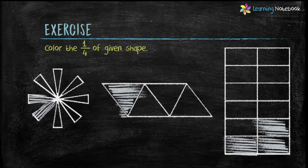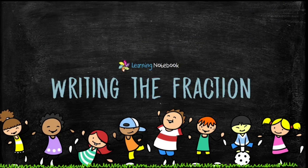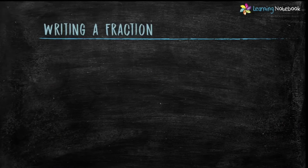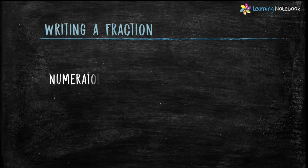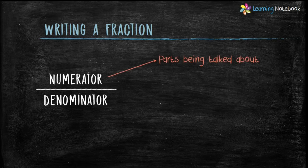So this is how we color the fraction. Now let's understand how to write the fraction. As I explained earlier, a fraction has two parts: Numerator and Denominator. Numerator is the part being talked about, and Denominator is the total number of equal parts.